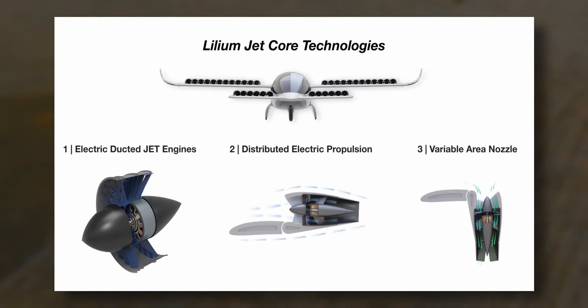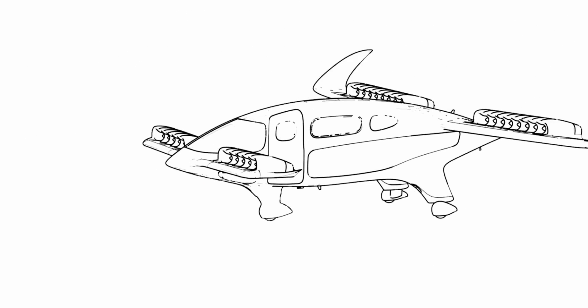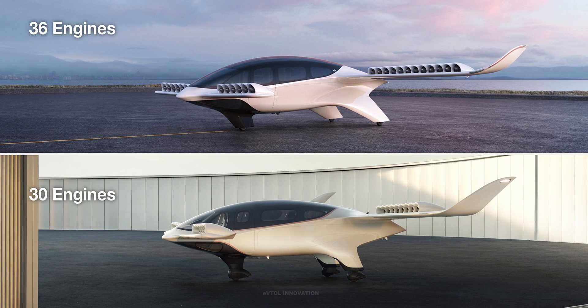In this new configuration, the diameter of the ducted fans was increased by 10%. This allowed Lilium to reduce the number of engines from 36 to 30 and maintain the total thrust and efficiency required.